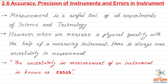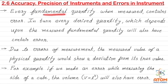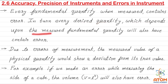The uncertainty in the measurement of an instrument is known as error. Every fundamental quantity when measured contains error. In turn, every derived quantity which depends upon the measurement of a fundamental quantity will also have error.